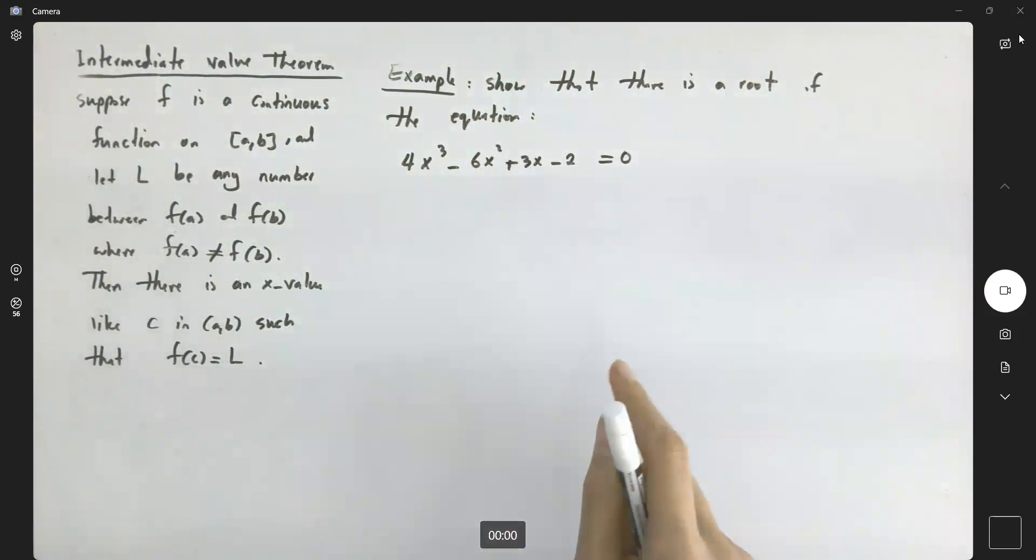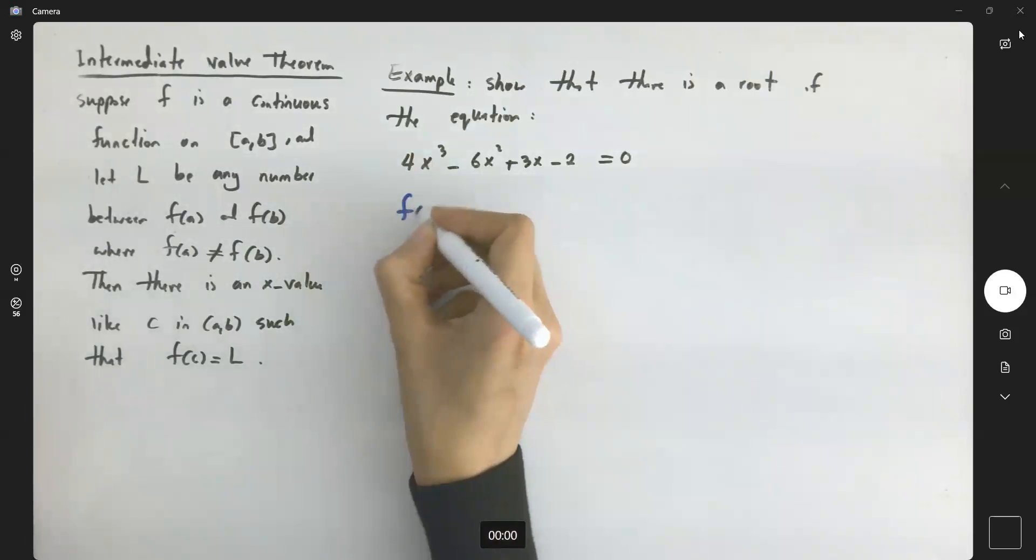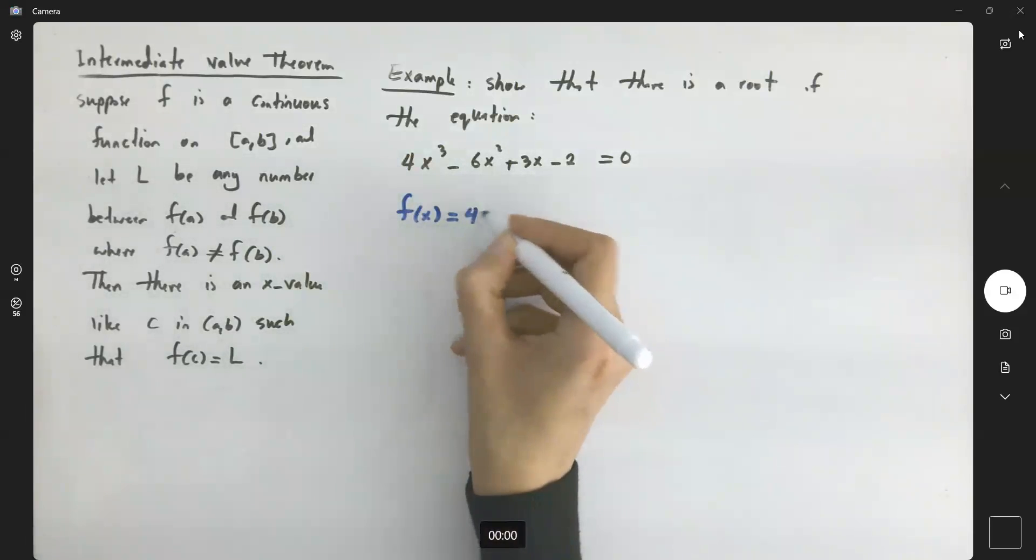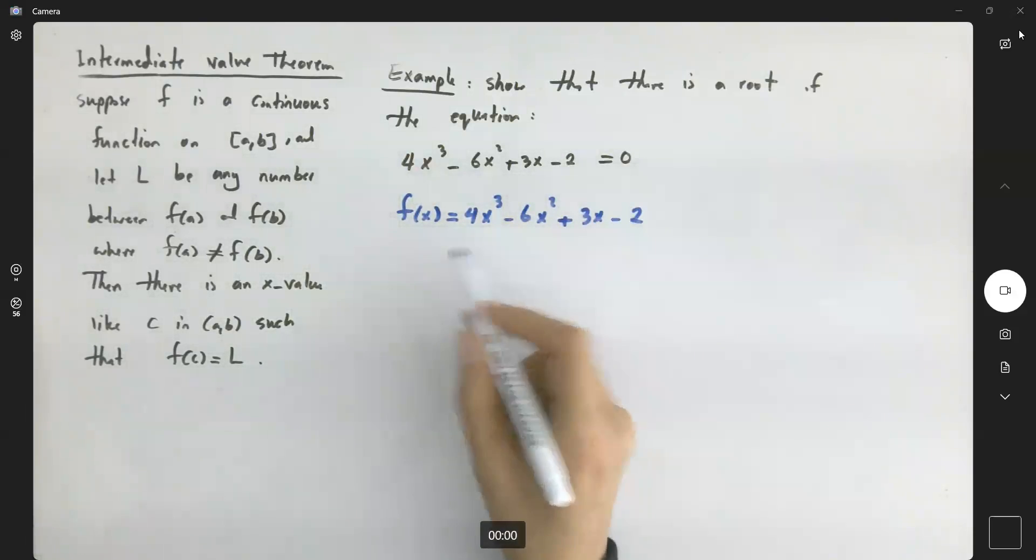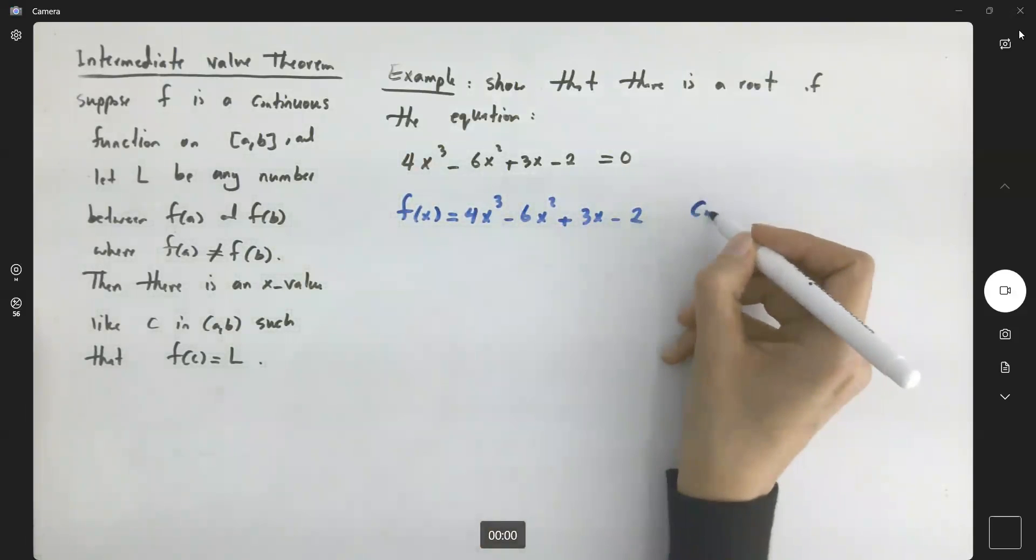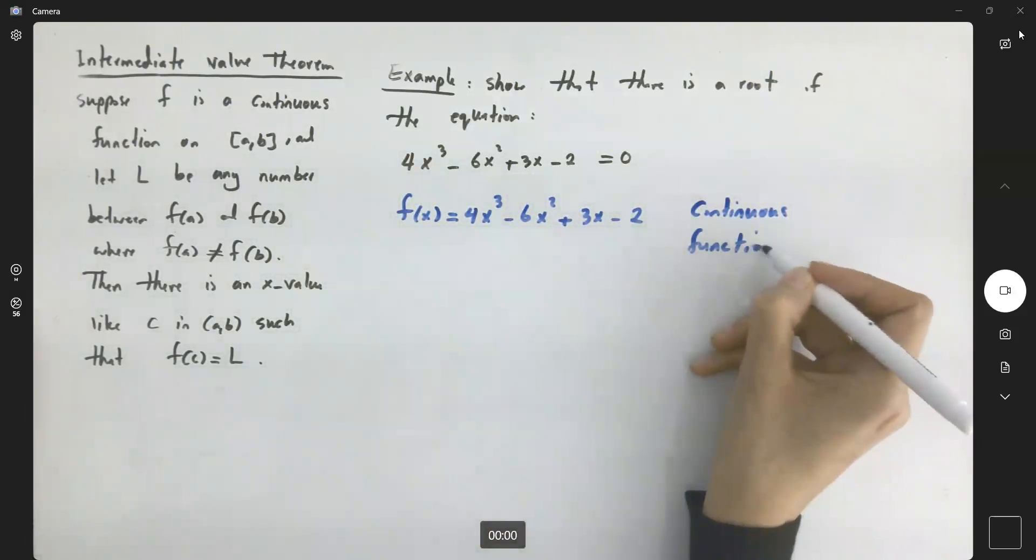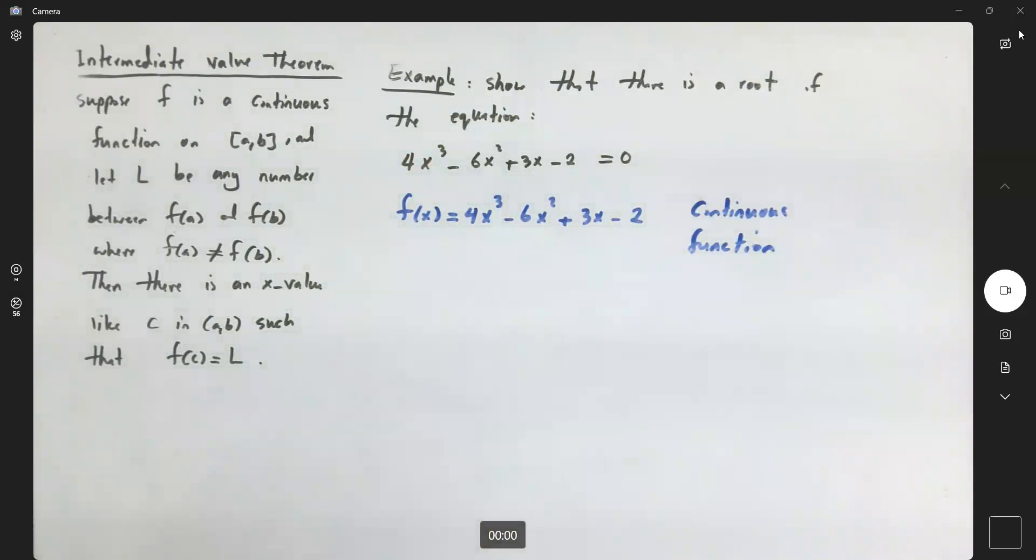First, let us define the function related to this equation. The function is f(x) = 4x³ - 6x² + 3x - 2. As you can see, the degree of this function is 3. This is a continuous function. Remember, polynomials are continuous functions.